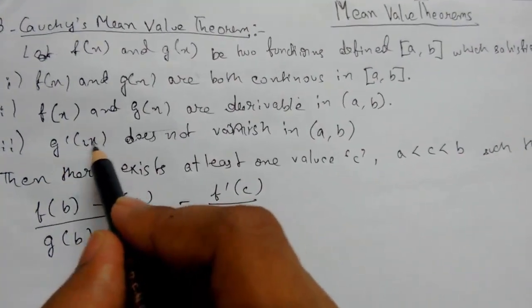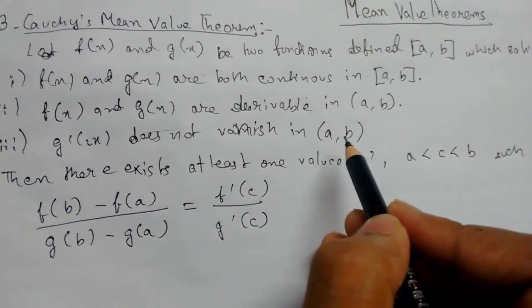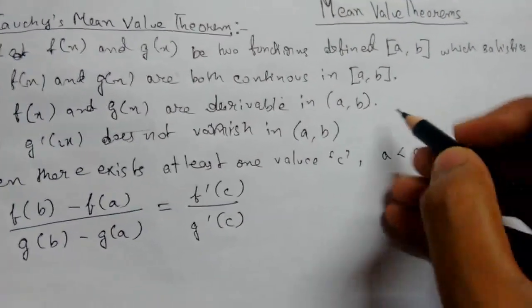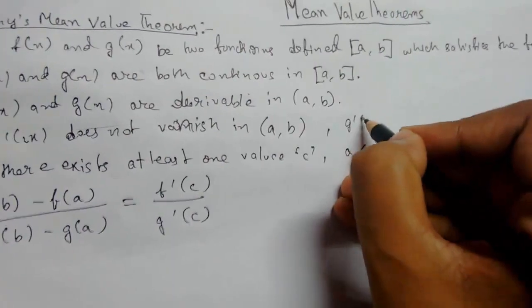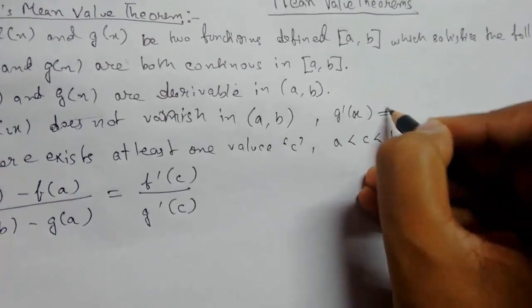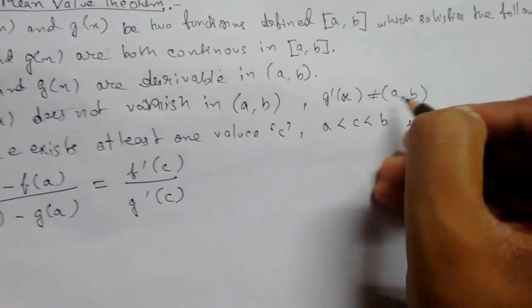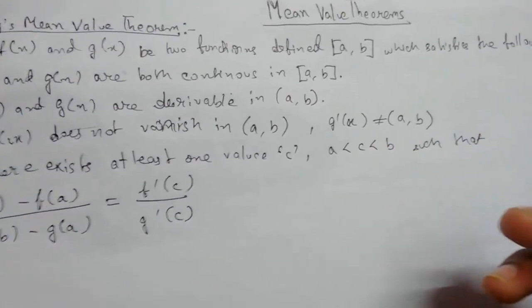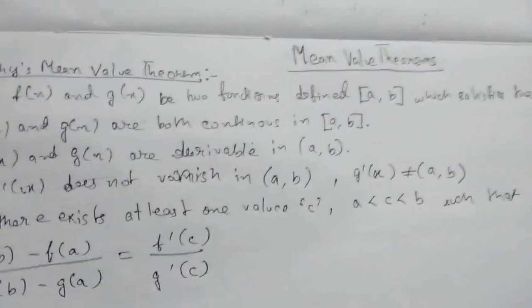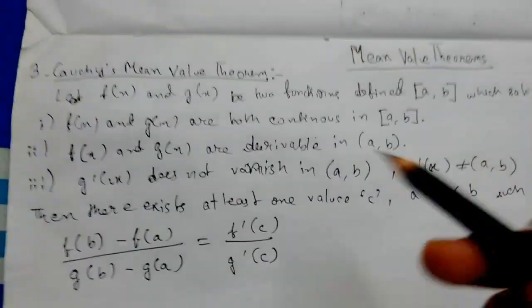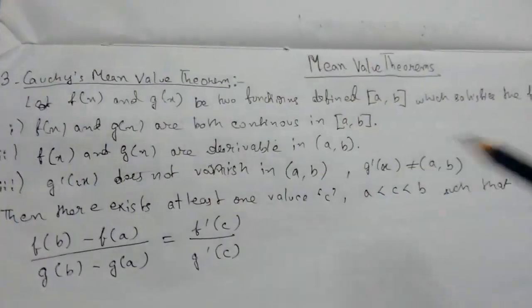And this point means that g'(x) does not vanish in the open interval (a, b), so we can write this as g'(x) is not equals to zero in (a, b). So g'(x) should not equal zero. This is what the third statement means, and this is our Cauchy's mean value theorem.